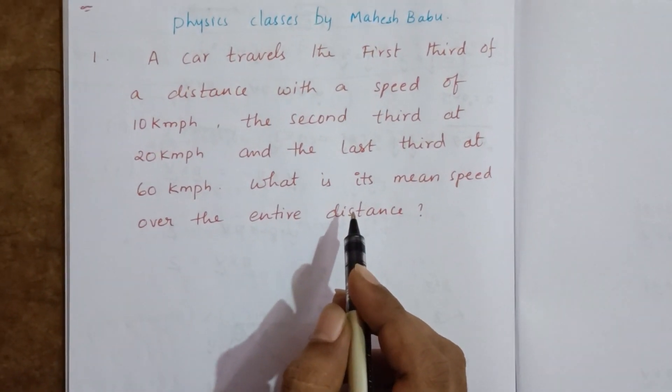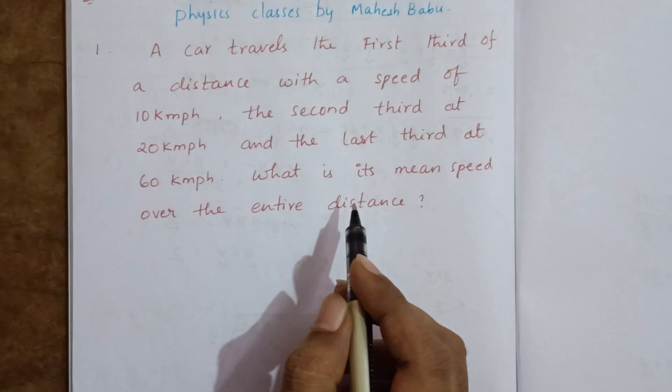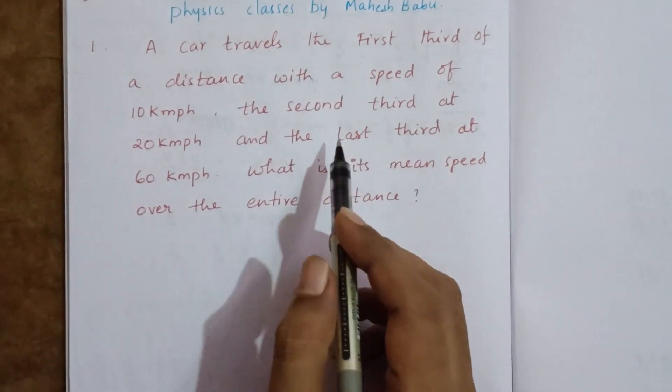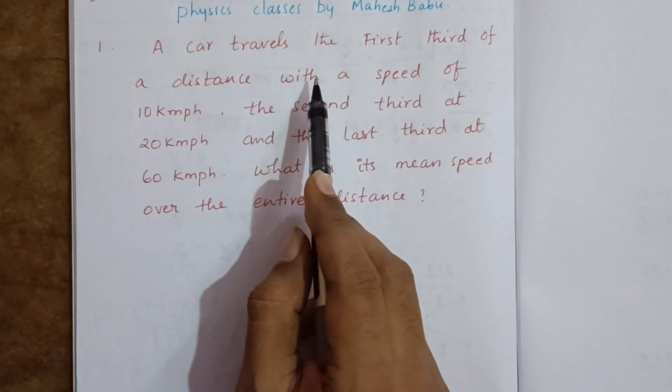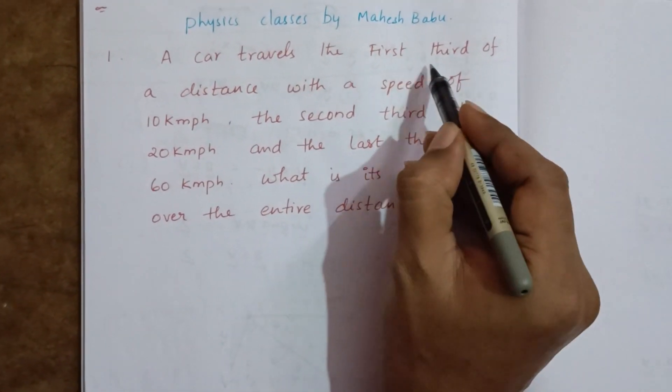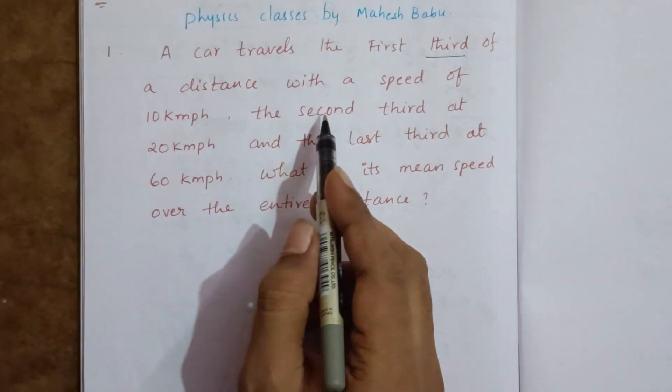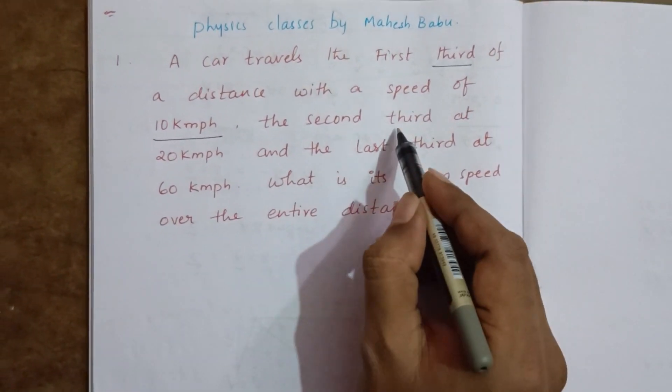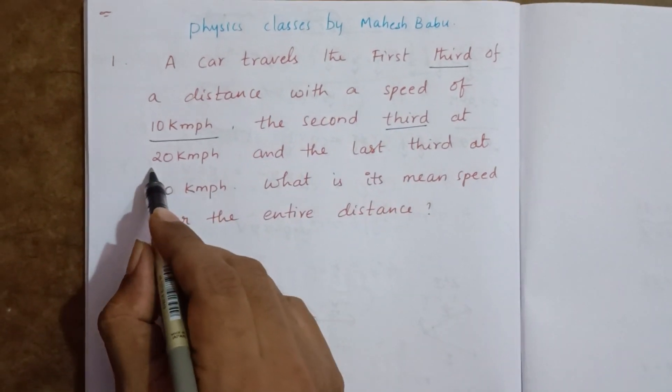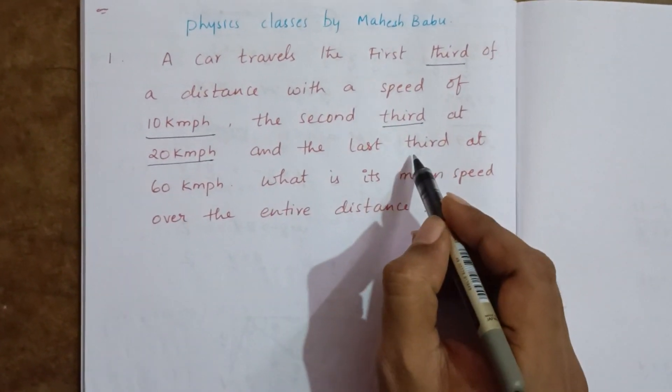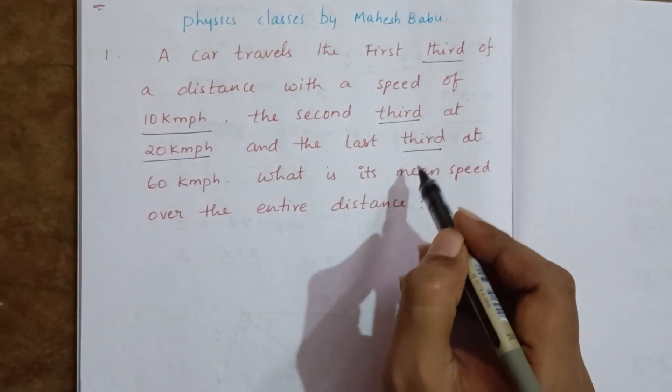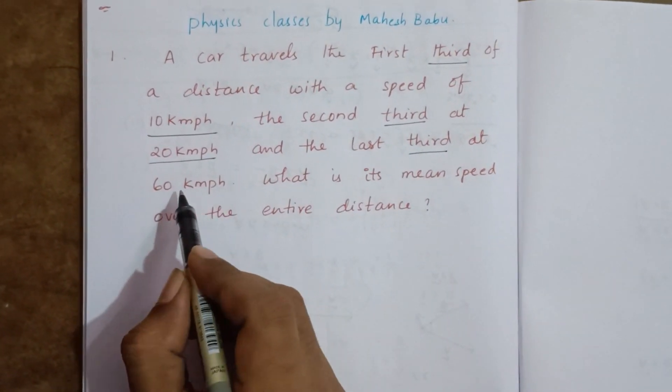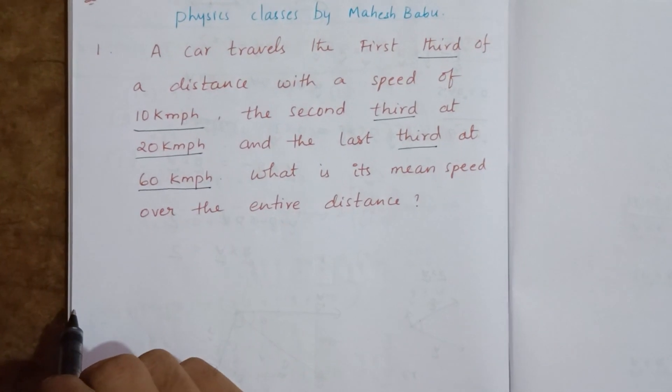Important four mark questions from the lesson motion in a straight line. The question is: a car travels the first third of the distance with a speed of 10 km per hour, the second third of the distance at 20 km per hour, and the last third at 60 km per hour.